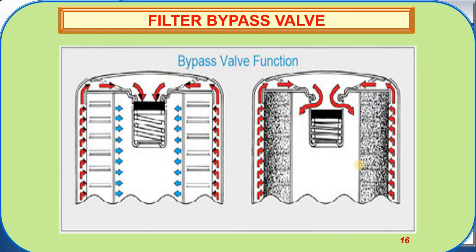Here is a picture of the operation of the filter bypass valve. When the element is clean and in working condition, the contaminated hydraulic fluid circulates around the element, and the element holds the impurities and allows only clean fluid toward the system. The bypass valve consists of two parts: a ball and a spring. In normal operation, the spring is in the fully extended position, pressing the ball so there is no path for contaminated hydraulic fluid to bypass.